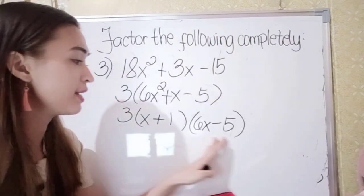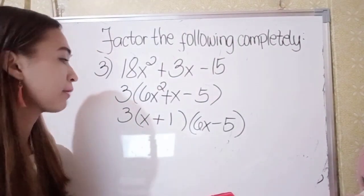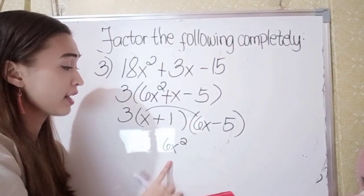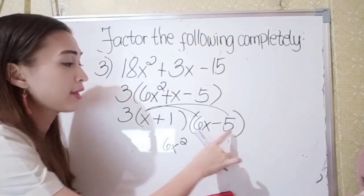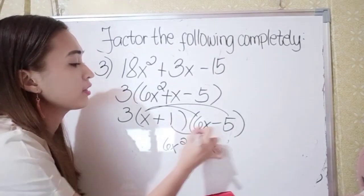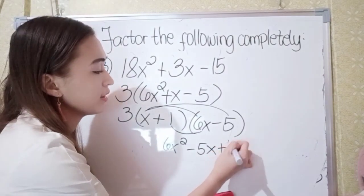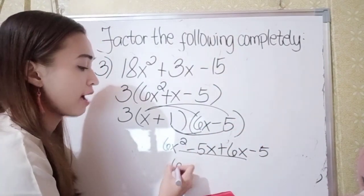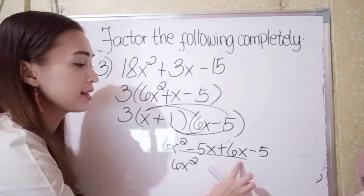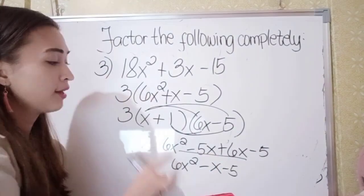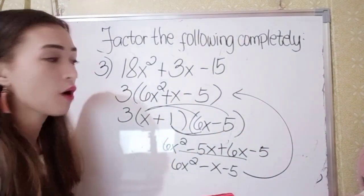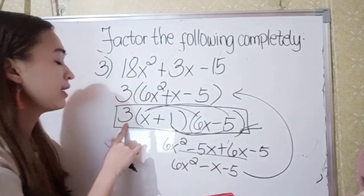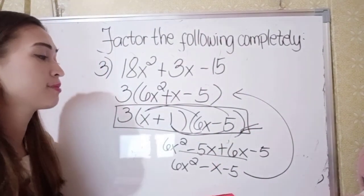To check if this factor is correct, we use the FOIL method: x times 6x is 6x squared. Outer term: x times negative 5 is negative 5x. Inner term: 1 times 6x is positive 6x. Last: 1 times negative 5 is negative 5. Combining similar terms: 6x squared, negative 5x plus 6x is negative x, and bring down negative 5 — they match. So our final answer in number 3 is 3 times (x plus 1) times (6x minus 5).